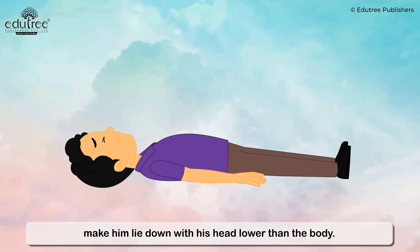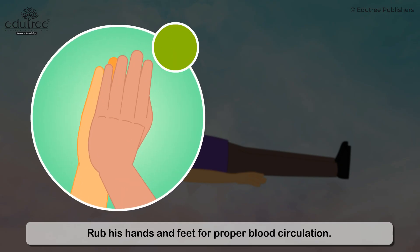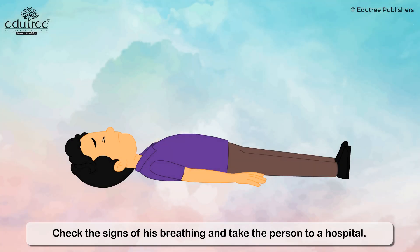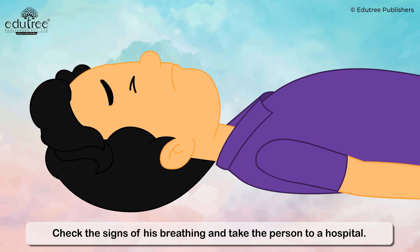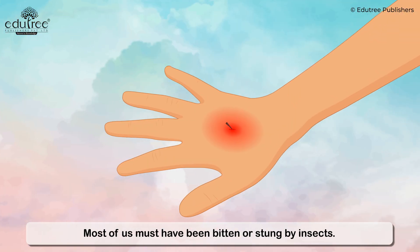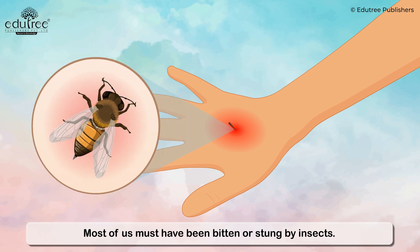If someone faints, make him lie down with his head lower than the body. Allow fresh air around the person. Rub his hands and feet for proper blood circulation. Check the signs of his breathing and take the person to a hospital.